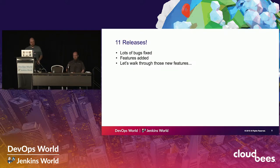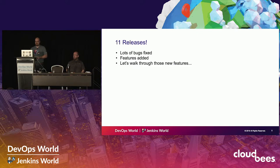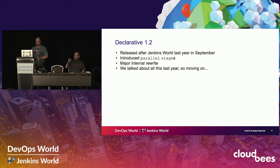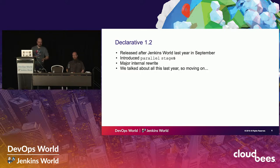We've had 11 releases, almost one per month. Had a lot of bug fixes, a couple of features - a couple of big ones, a lot of small ones. 1.2 was released in September right after Jenkins World last year, where we introduced parallel stages. We had a major internal rewrite, and we actually talked about all of those things last year. So if you weren't here, jump on YouTube and watch that.